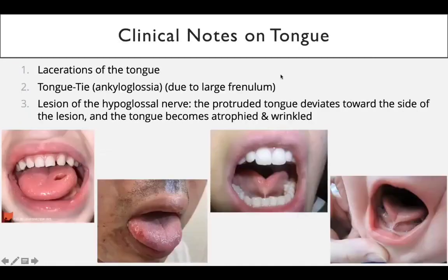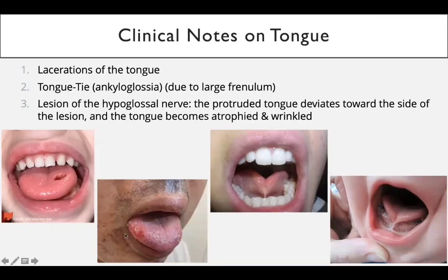Moving to clinical notes on the tongue — common clinical findings seen in the outpatient department. First, lacerations of the tongue. A common type is the tongue bite, which is a lateral anterior laceration of the tongue. This can be an ulcer or lesion; it becomes an ulcer when it is deep. It can also be a sign of a lesion of the hypoglossal nerve.